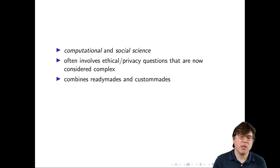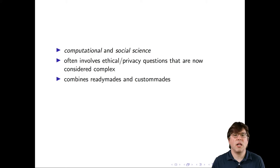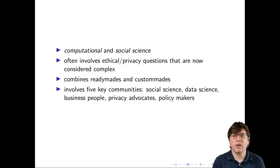So what is computational social science? I think it often has these three characteristics: it involves a computational element and a social science element; it often involves ethical and privacy questions that are now considered complex; and it often combines ready-made and custom-made data.